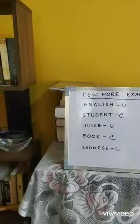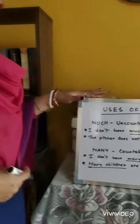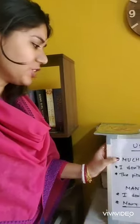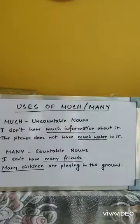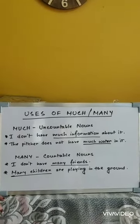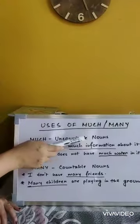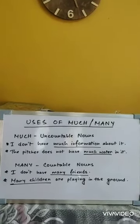Here we will learn the use of much and many. Much and many are called determiners. In this class we will learn about four determiners: much, many, few, and little. Much is used with uncountable nouns — things that we cannot count.